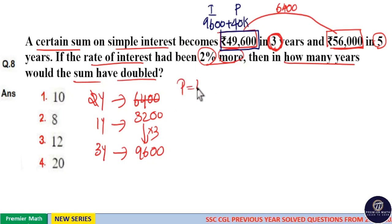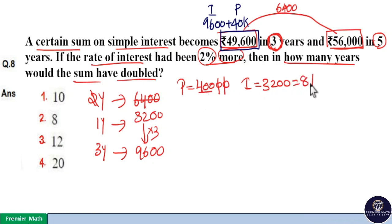So the principal is ₹40,000, and the interest for 1 year is ₹3,200. Here, 1% of ₹40,000 is ₹400. ₹400 × 8 equals ₹3,200, so the interest rate is 8% per year.